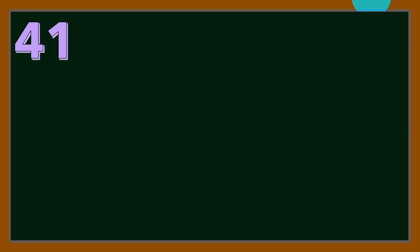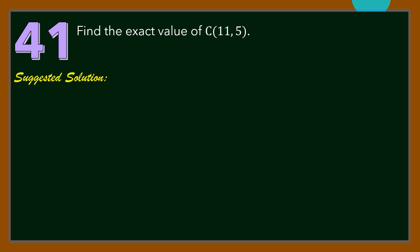Let us begin with question number 41. Find the exact value of 11 combination 5. For our suggested solution, let us use the formula for combination. That is, N combination R is equal to N factorial over the quantity N minus R factorial times R factorial.